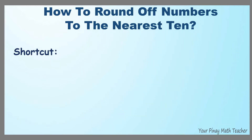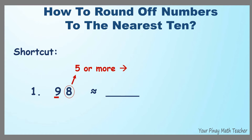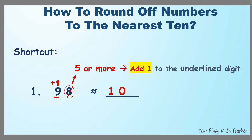What if there is no number line shown? There is a shortcut to round off numbers to the nearest 10. For example, 98. Underline the tens digit and encircle the digit to its right. If the encircled digit is 5 or more, then add 1 to the underlined digit. The digit we encircled is 8, so we have to add 1 to 9. 1 plus 9 is 10, and we make the encircled digit 0.